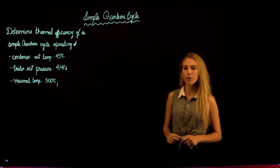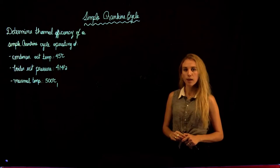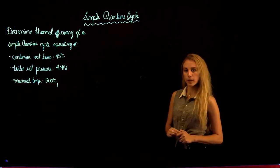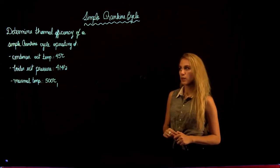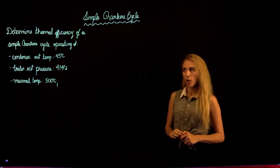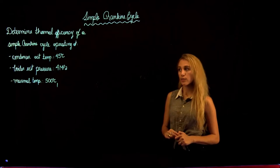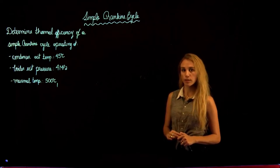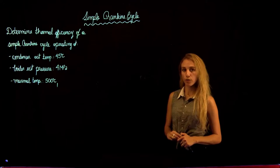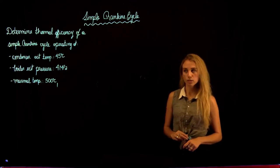Hello everybody and welcome to Thermodynamics 2 tutorials with Maria. We are going to be solving a sample Rankine cycle. We are given the question to determine the thermal efficiency of a sample Rankine cycle operating at a condenser exit temperature of 45 degrees Celsius, a boiler exit pressure of 4 MPa, and a maximum temperature of 500 degrees Celsius.